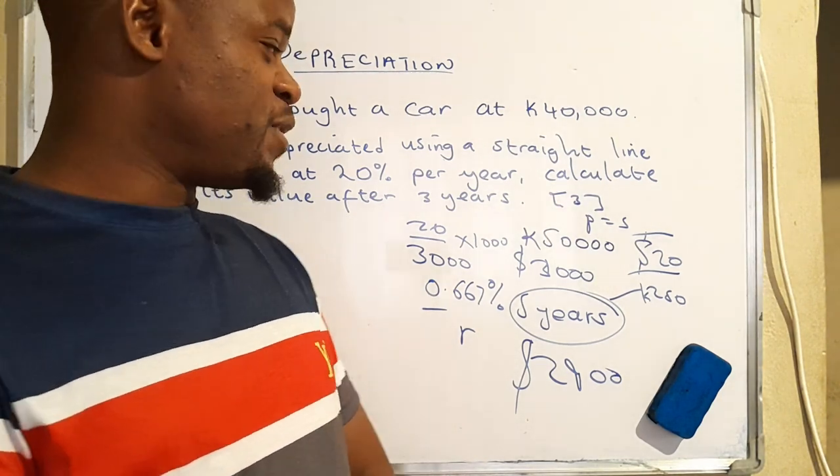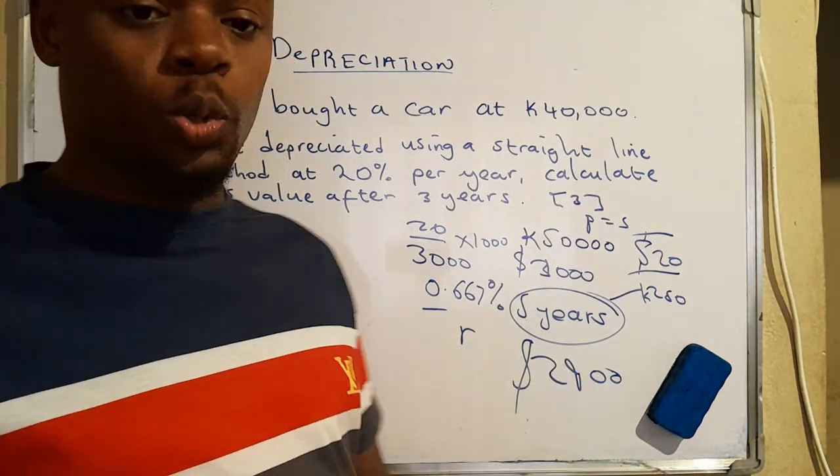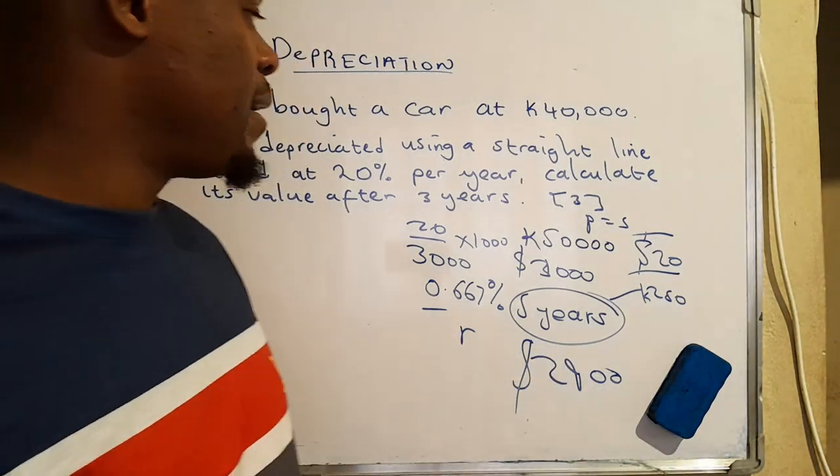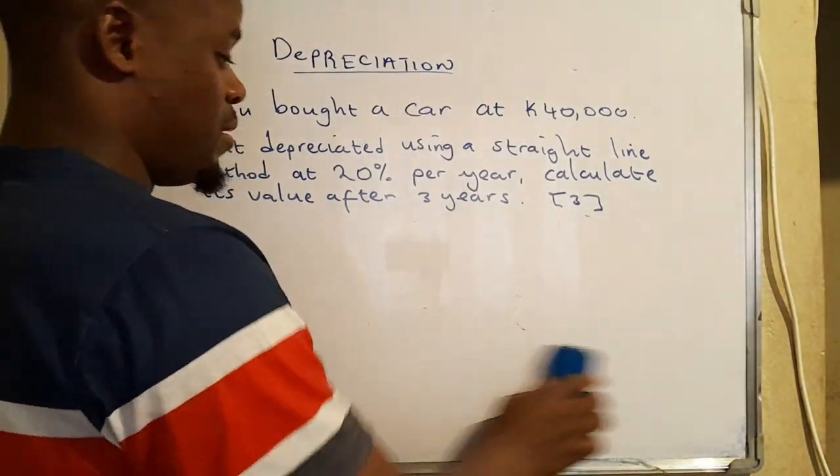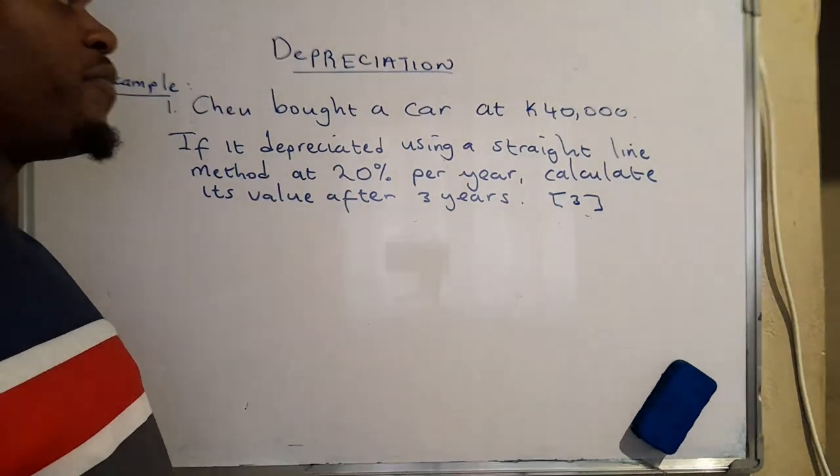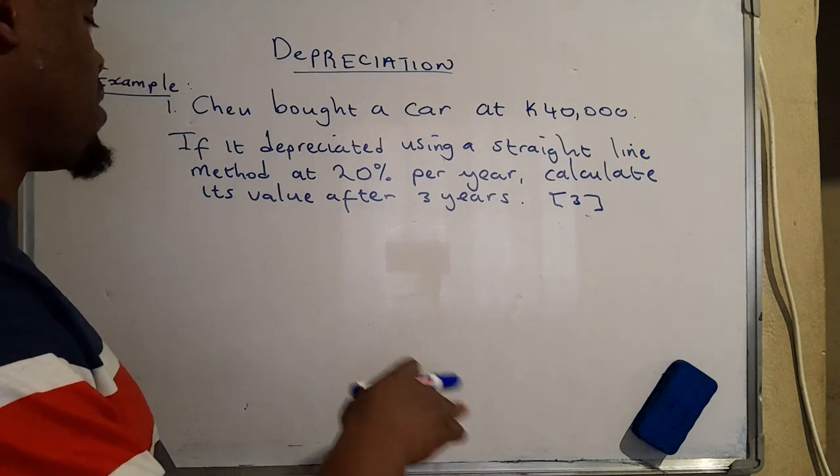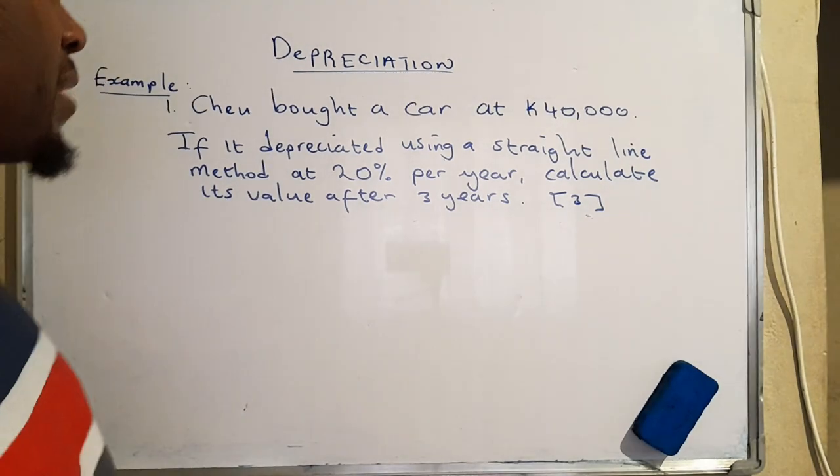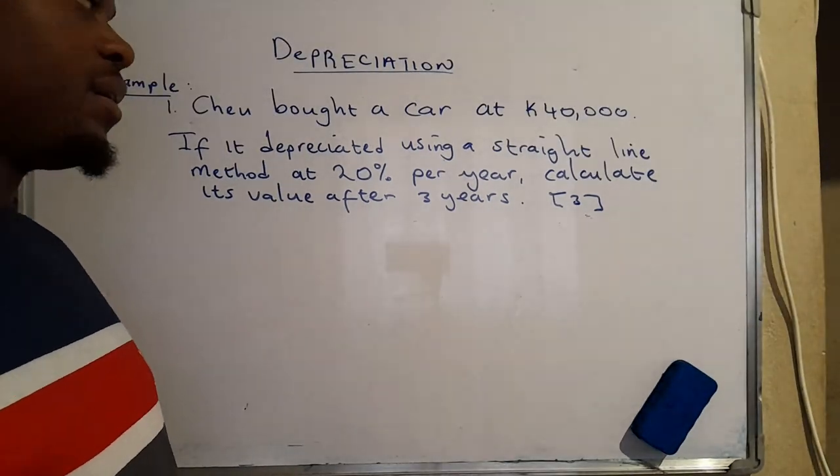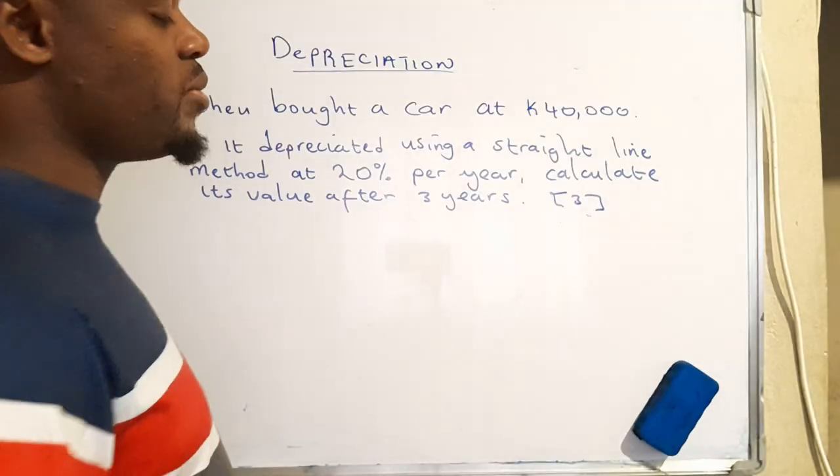I think I've gotten into teaching, but basically I just wanted you to have a clue of what depreciation is all about. Now let's look at this example that we have here. They're saying Cheu bought a car at 40,000 quats. If it depreciated using a straight line method at 20 percent per year, calculate its value after three years.